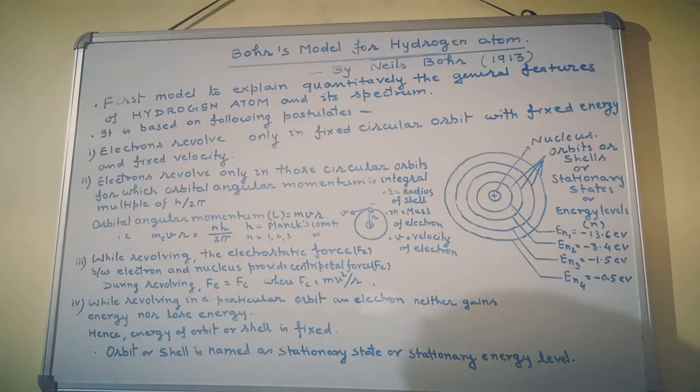Bohr's model for hydrogen atom was proposed by Niels Bohr in 1913. It is based on two developments: number one, dual character of electromagnetic radiation, and number two, experimental results or evidences from atomic spectrum. On the basis of these two developments, Bohr proposed his model.